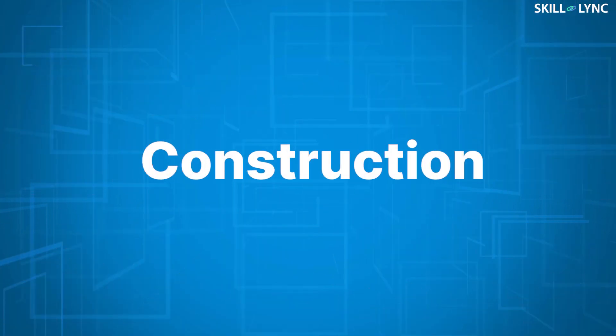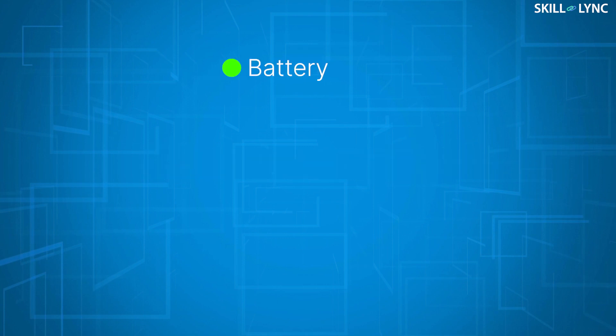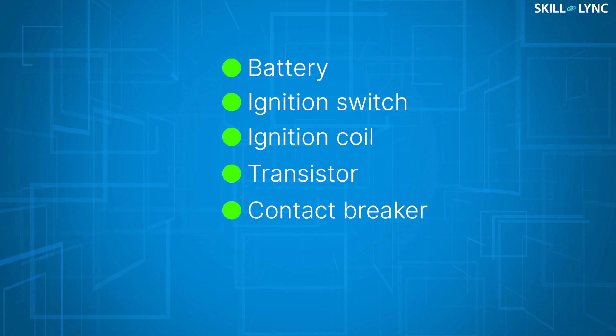Now, let us move on to see the construction of the transistorized ignition system. It consists of a battery, an ignition switch, an ignition coil, a transistor, a contact breaker, a distributor and the spark plugs.